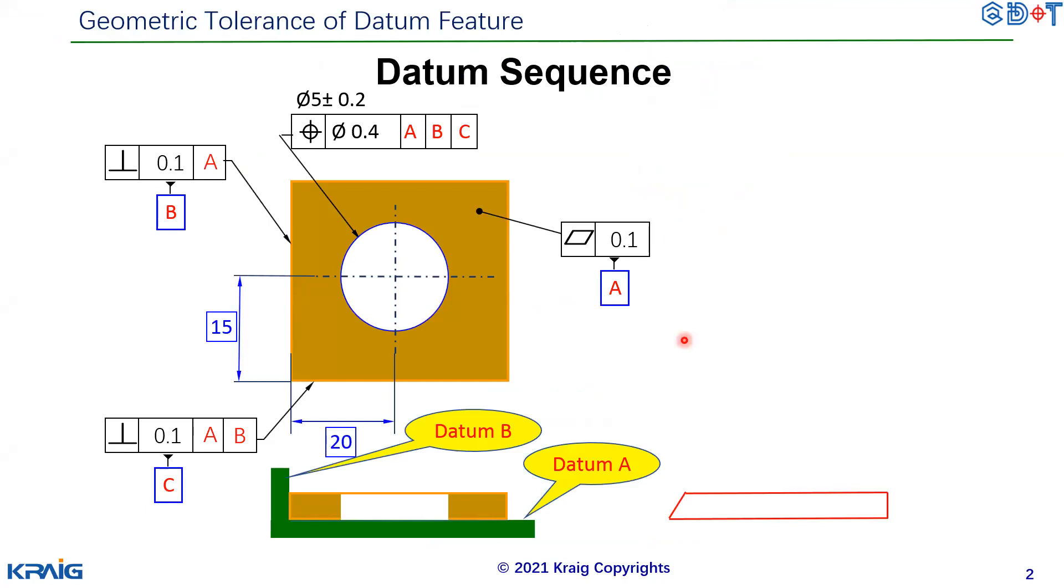Before understanding orientation tolerance of the datum, let's figure out what's the datum sequence or priority. The precedence or priority of the datum ABC is decided by the precedence of this datum ABC letter inside the datum feature control frame here.